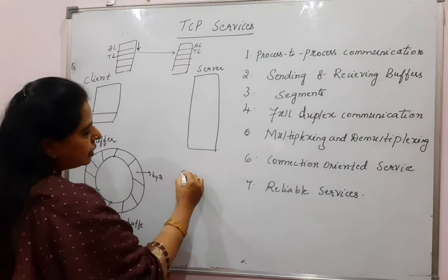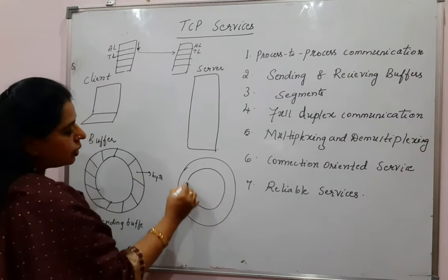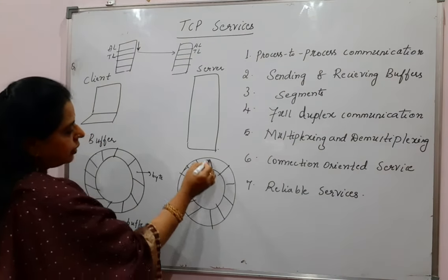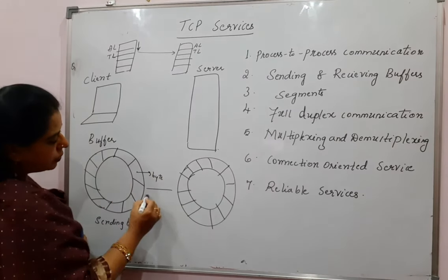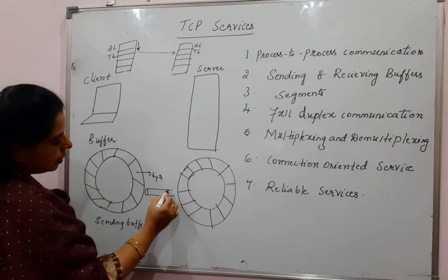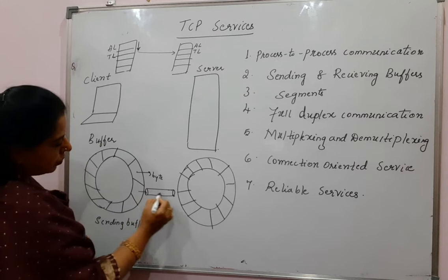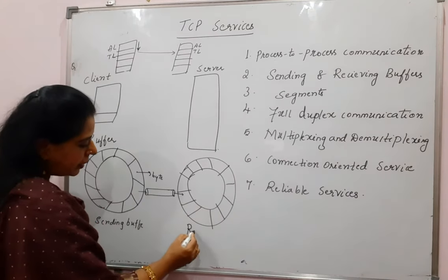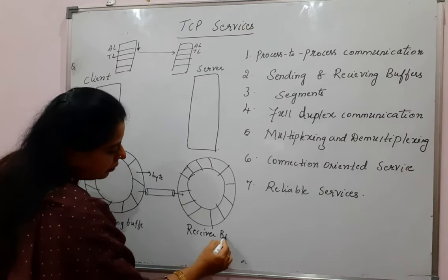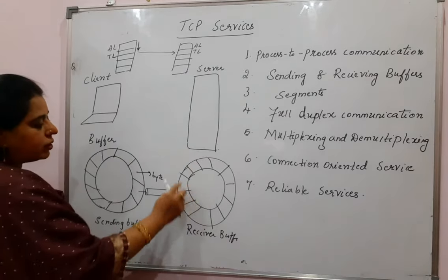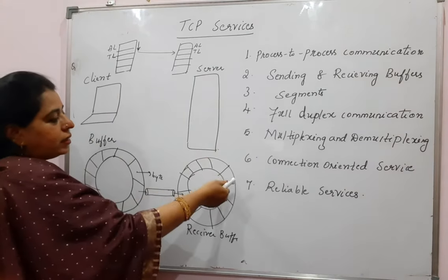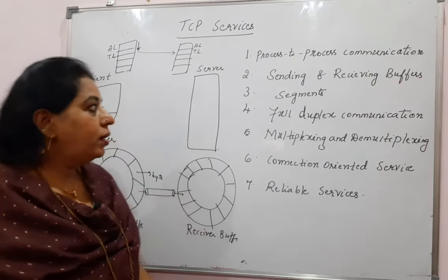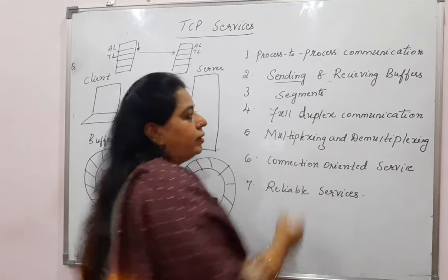Similarly, at the server side also you have a buffer at the receiver side. The receiver side buffer is also storing all the bytes that it is receiving. As the bytes travel, they start storing at the receiver side. We say there is a buffer at the sender side and a buffer at the receiver side. Once the receiver stores the bytes in the buffer, it will later send these bytes to the application program running at its own side.